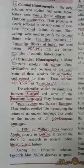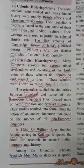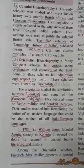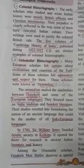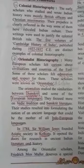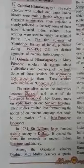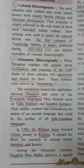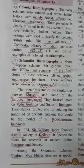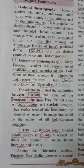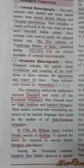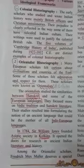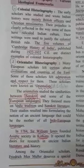In 1784, Sir William Jones founded the Asiatic Society in Kolkata. He opened the doors for research in ancient Indian literature and history.